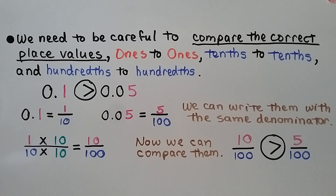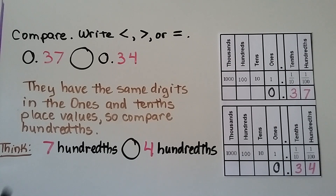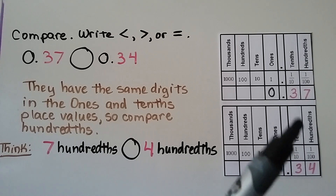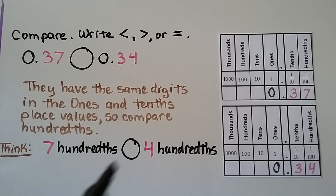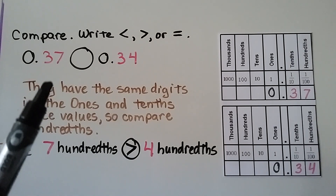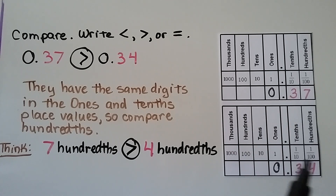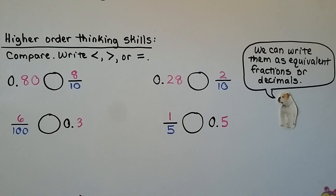We need to compare 37 hundredths and 34 hundredths. They have the same digits in the ones place and the same digit in the tenths place, so we compare their hundredths. Seven hundredths is greater than four hundredths, so 37 hundredths is greater than 34 hundredths.